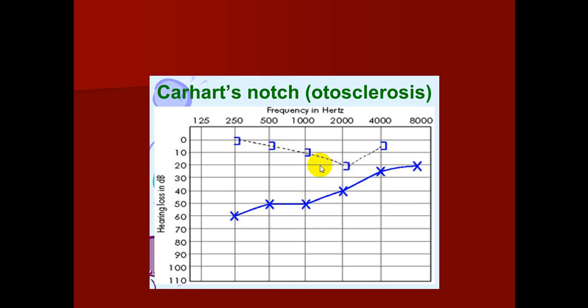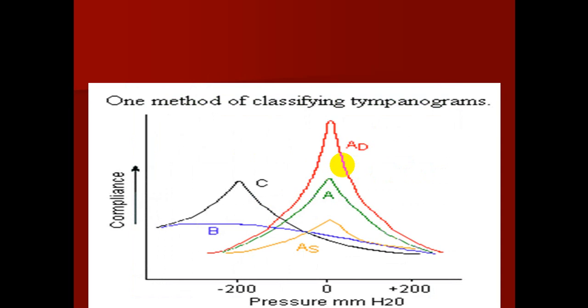There is a dip in the bone conduction at 2 kHz called the Carhart notch, which is present in only 35% of patients with otosclerosis and is a characteristic sign. On tympanometry, the type of tympanogram in otosclerosis is type AS: normal pressure but low compliance, due to impaired mobility and fixation of the stapes at the oval window.